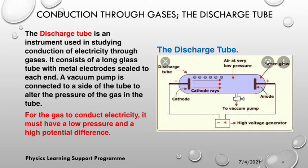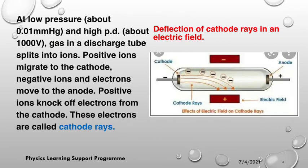For gas to conduct electricity, it must have a low pressure and a high potential difference — a low pressure and a high PD. Do not forget that. At low pressure and at high PD, gas in a discharge tube splits into ions.